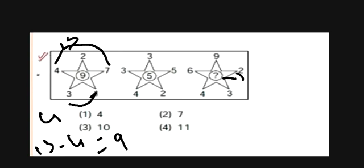If we do a similar thing in the second step, we add 3 plus 3, that is 6, 6 plus 5 is 11, and 4 plus 2 is 6, 11 minus 6 is 5.